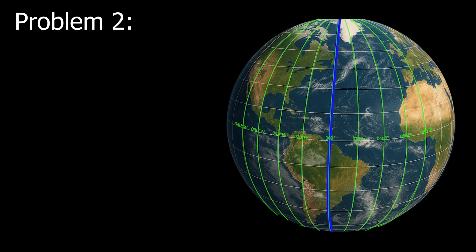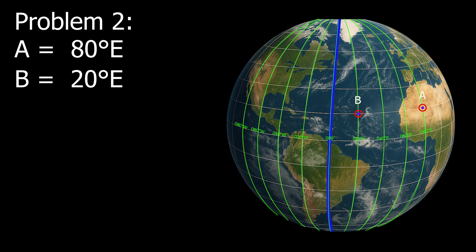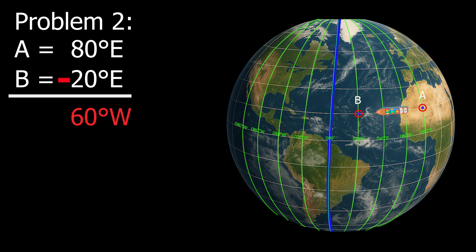Example number two: Point A, 80 degrees east. Point B, 20 degrees east. The difference is 60 degrees. The vessel is moving west. The D-long is 60 degrees west.